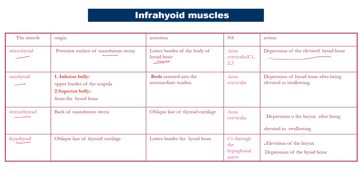The omohyoid muscle has two bellies: the inferior belly from the upper border of the scapula, and the superior belly from the hyoid bone. Both bellies insert into the intermediate tendon. Nerve supply from ansa cervicalis. Action: depression of the hyoid bone after being elevated in swallowing. The sternothyroid muscle takes origin from the back of the manubrium sterni and is inserted into the oblique line of the thyroid cartilage. Nerve supply from ansa cervicalis. Action: depression of the larynx after being elevated in swallowing.